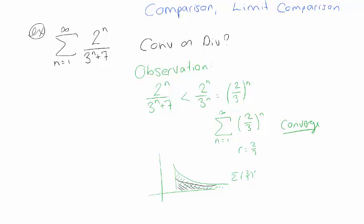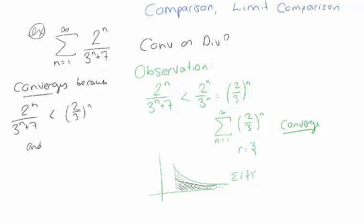The fact that our comparison series converges and our comparison series is bigger tells us that our original series is going to converge. This series converges because its terms are smaller than the geometric series terms, and when I sum up the larger terms, I get a convergent sum — it doesn't go off to infinity. So we can say that these converge by the comparison test.